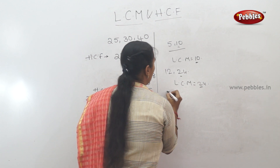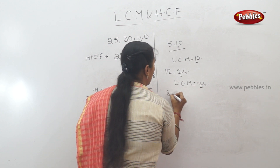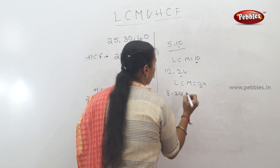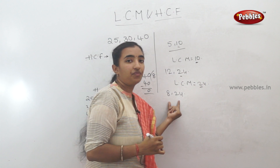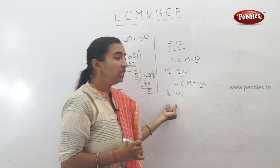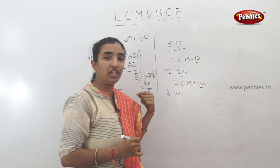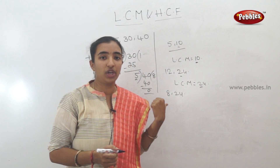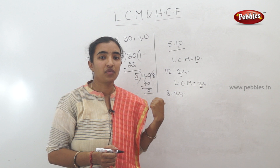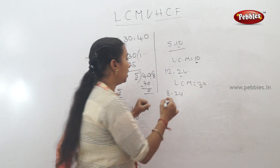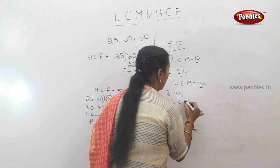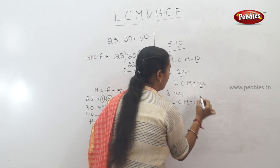Next example: 8 and 24. Check if 8 is divisible into 24 — yes, 3 times 8 is 24. So the LCM is 24.